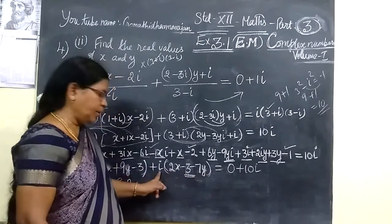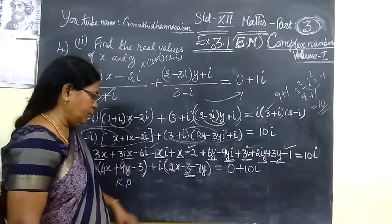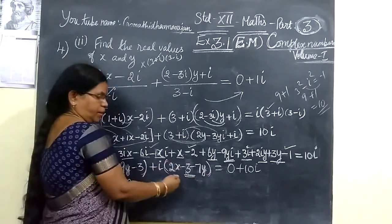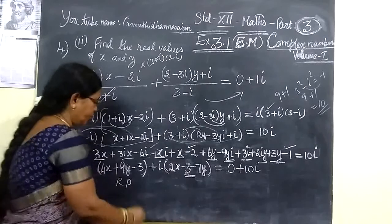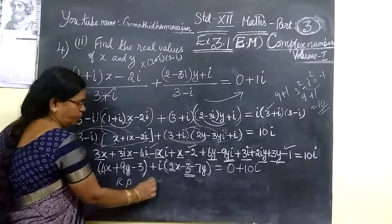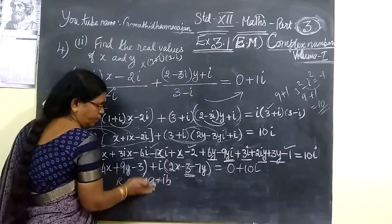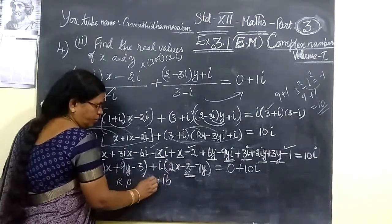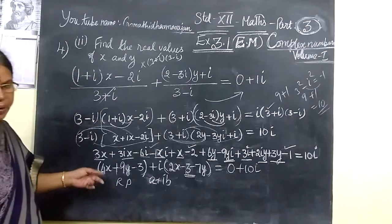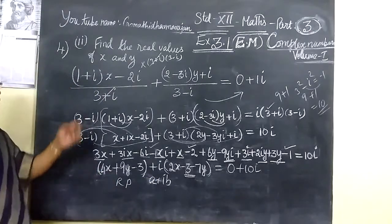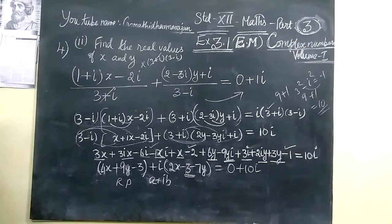This is of the form A plus iB. So now we equate real and imaginary parts. We have the real part and the imaginary part, and from this you can find the values of x and y.